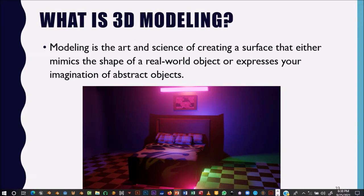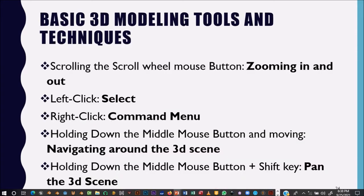3D modeling is the art and science of creating a surface that either makes the shape of a real-world object or expresses your imagination of abstract objects. You have an example of a bedroom — it could be a real-life thing or something you imagined. When you want to create a scene in 3D, there are some basic tools and techniques we'll be using.